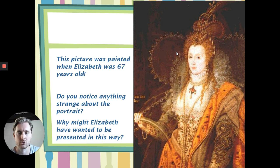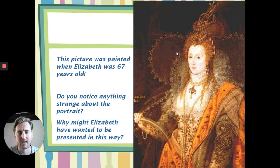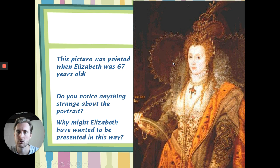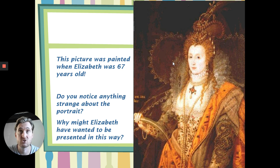Do you notice anything strange about the portrait — that she was 67 years old when this one was painted? What do you think might be strange? For a 67-year-old woman, she looks awfully young. I mentioned earlier she suffered from alopecia — hair loss — so she's clearly wearing a wig at this point. But can you see any scars on her face, or that her face is burnt? No. So she's made herself look younger in this portrait, because it definitely doesn't represent a 67-year-old woman. Why might she have wanted to present herself in this way? Have a think and pause, then when you're ready to continue, press play.